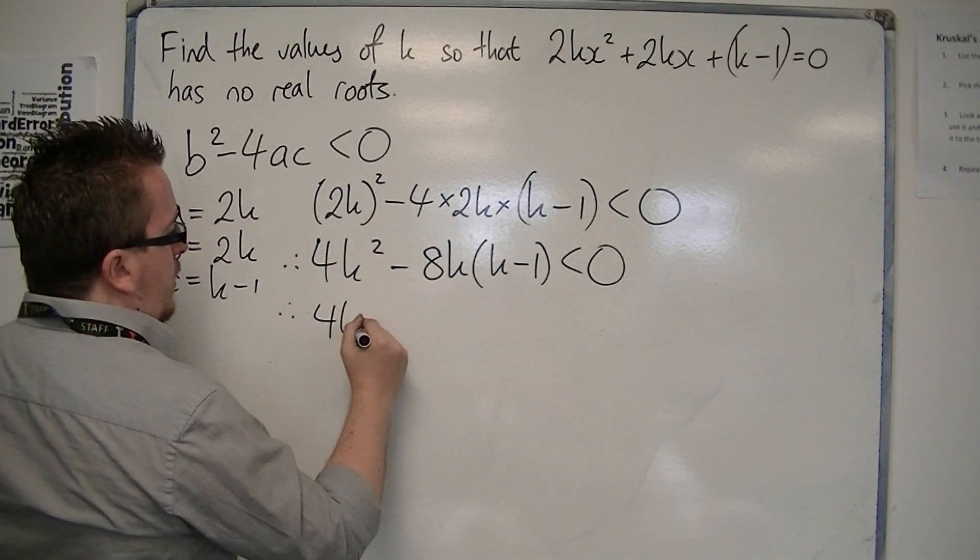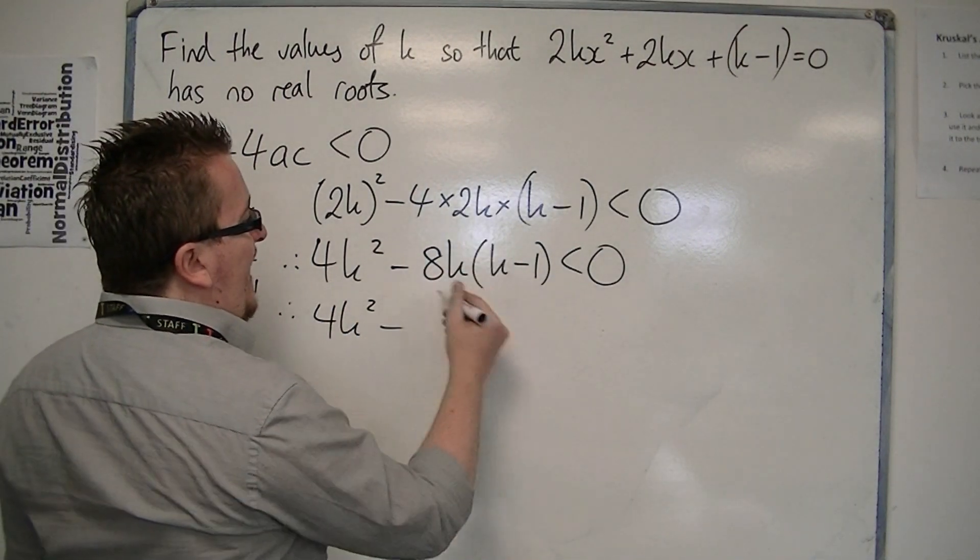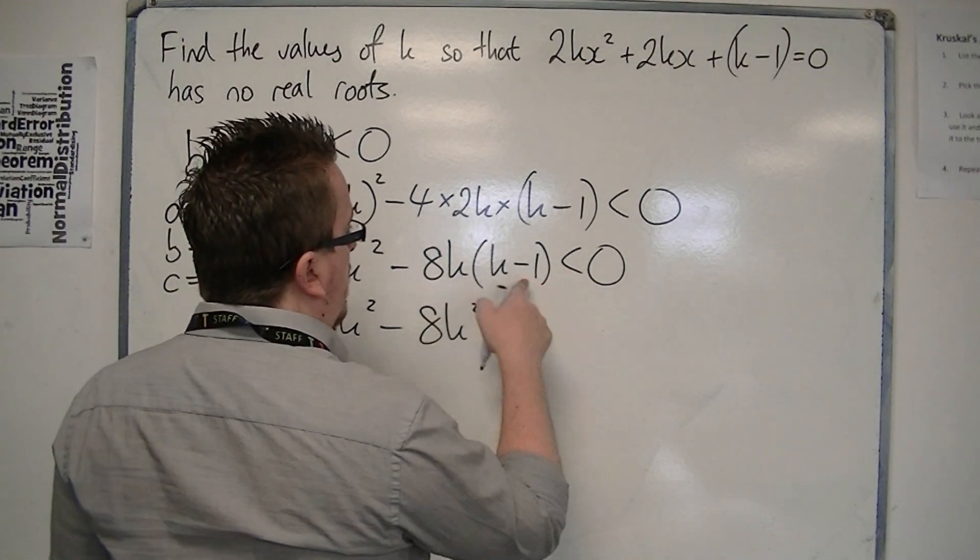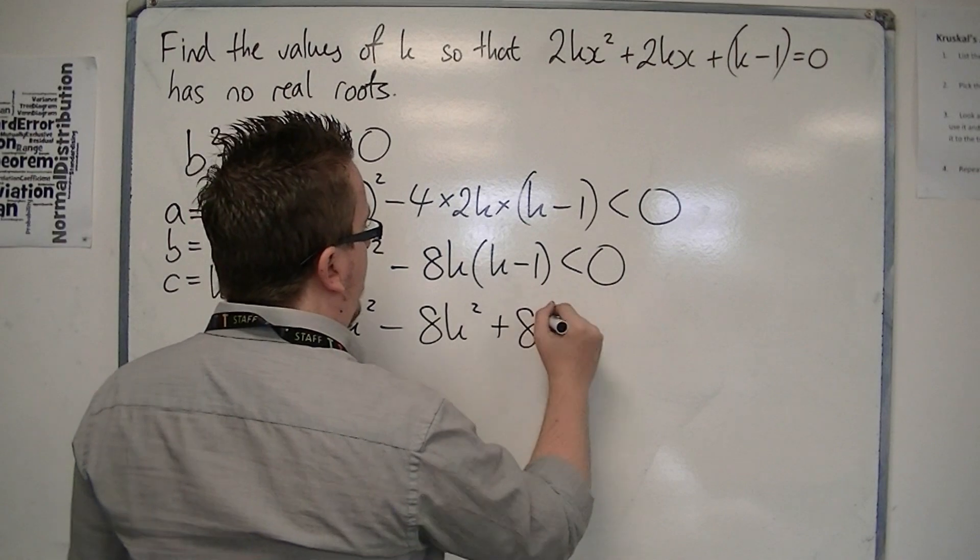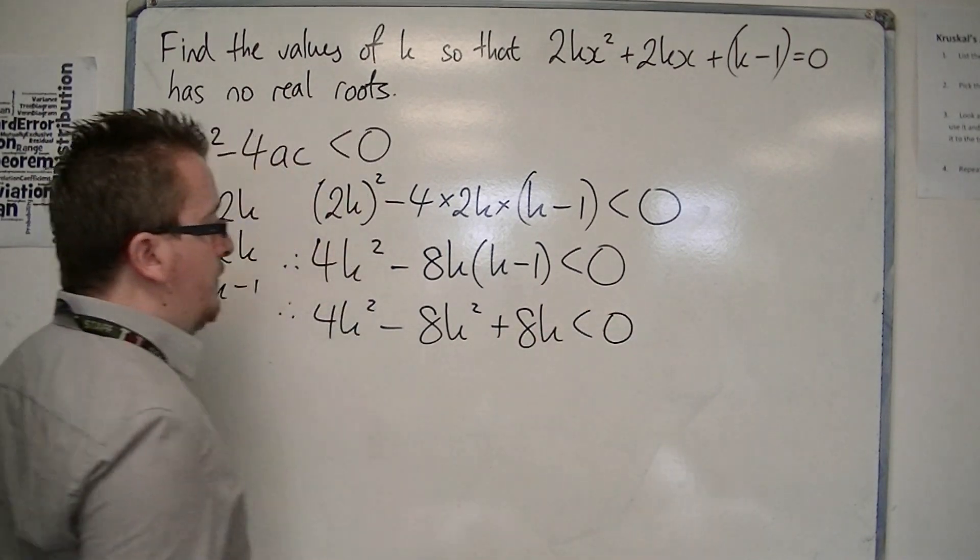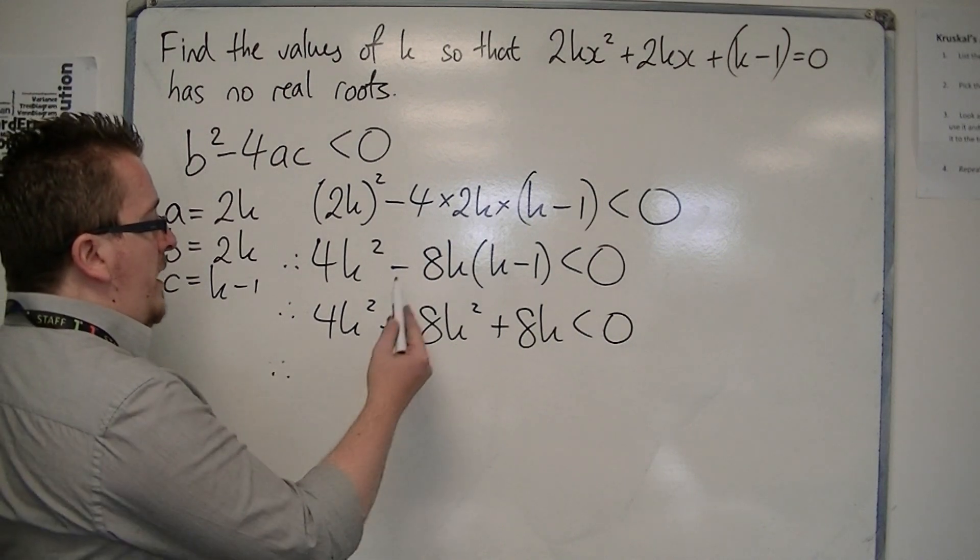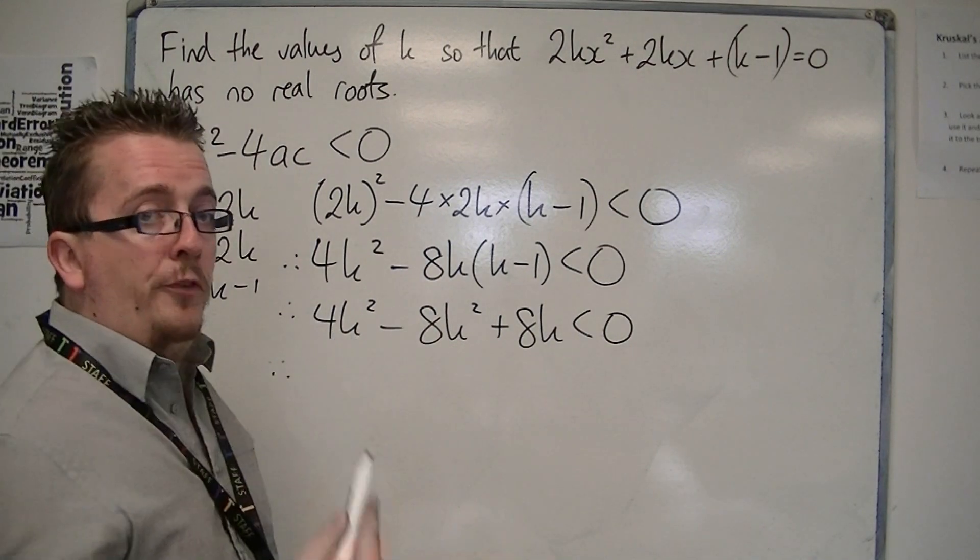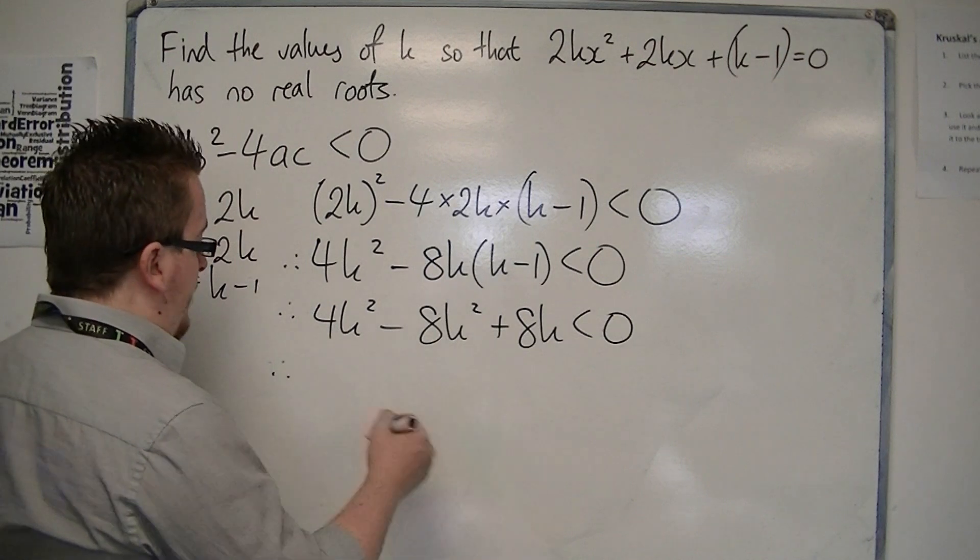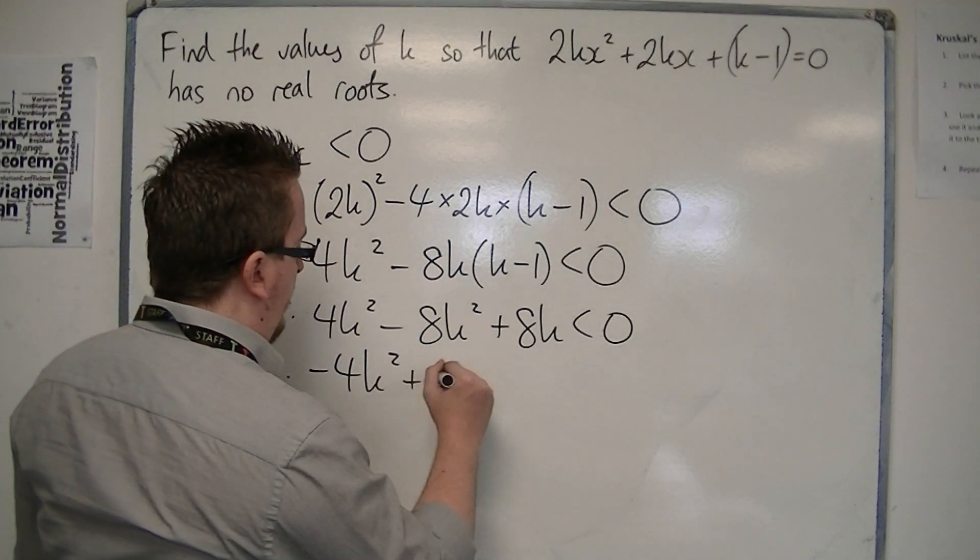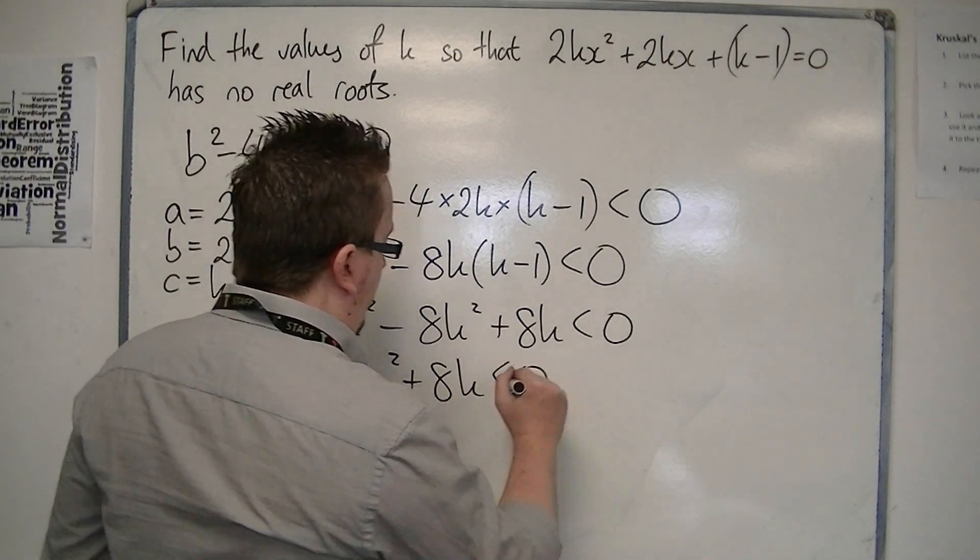We've got 4k² minus 8k(k-1). Multiplying out: 4k² - 8k² + 8k < 0. So 4k² minus 8k² is minus 4k², giving us -4k² + 8k < 0.